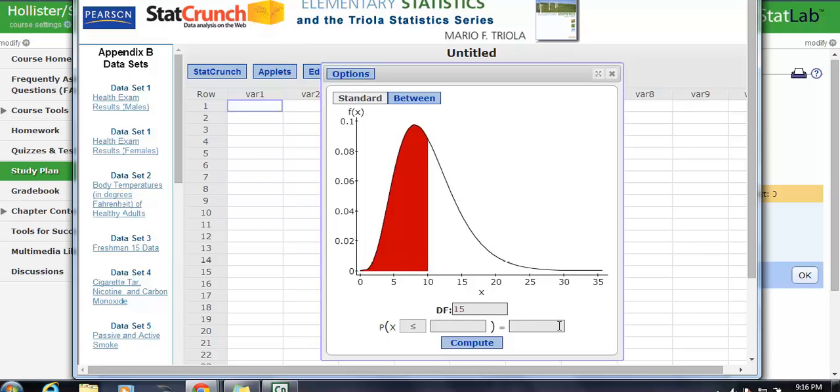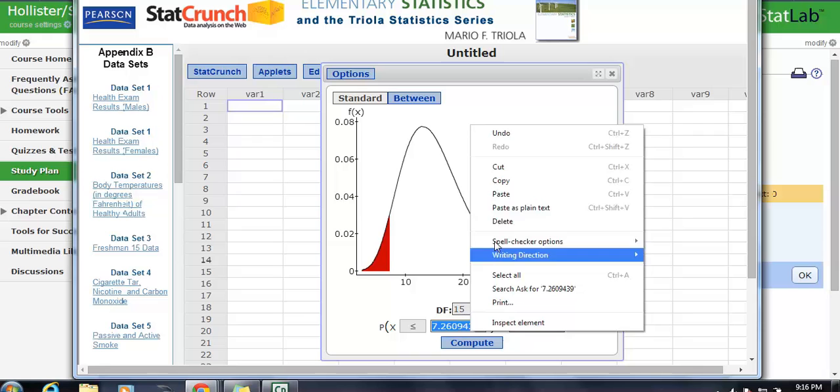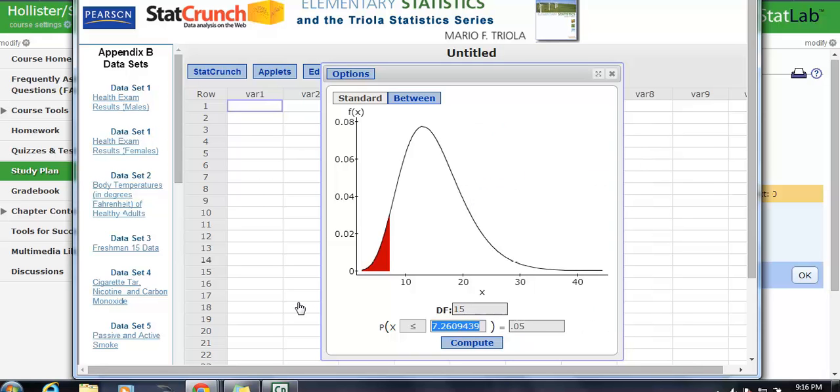And we're looking at the bottom end, because it said the claim was less than. And we want to make sure that the bottom end only has a 0.05 area. So the chi-squared value we would be looking for would be a value less than 7.2609.